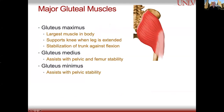Our major glute muscles — we have the gluteus maximus, which is the largest muscle in the body. It's interesting because it actually supports the knee when the leg is extended, and it's also a stabilizer of the trunk against flexion of the trunk. Think about leaning forward or falling forward — your gluteus maximus will actually stabilize you as you do that.